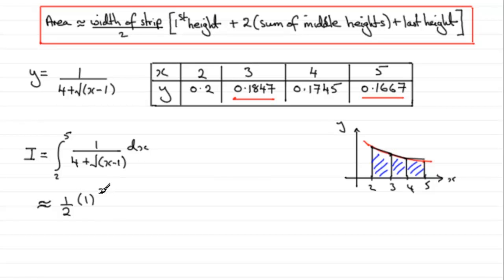And then it's multiplied by the first height, and the first height is the first y value, in this case 0.2.